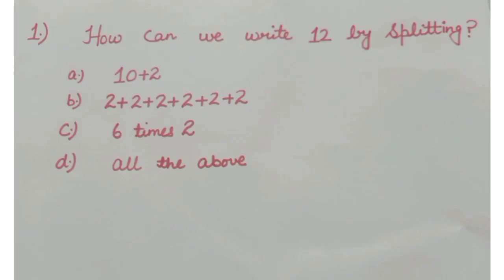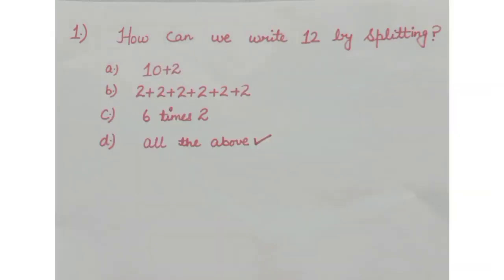Now, question for pairs: How can we write 12 by splitting? Option A: 10 plus 2. Option B: 2 plus 2 plus 2 plus 2 plus 2 plus 2. Option C: 6 times 2. Option D: all the above. Students, we know option A: 10 plus 2 is equal to 12. Option B: if we add 2 six times we get 12. Option C: 6 times 2, that is 2 into 6 is equal to 12. So the answer is option D, all the above.